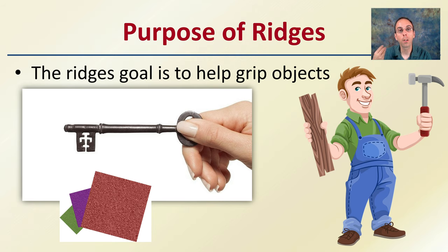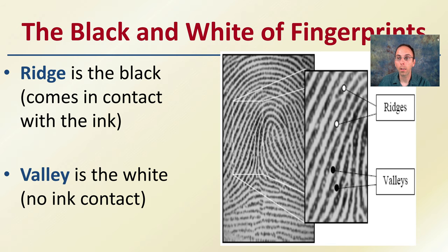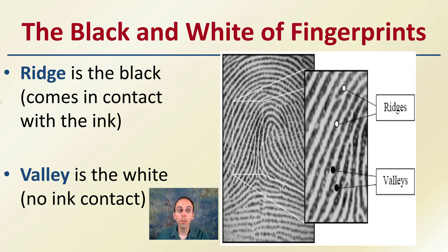If you've ever put hand lotion or oil on, you can see it's very hard to grip things because you're filling in those ridges. When looking at a fingerprint image, the ridge is the black area because it comes in contact with the ink, while the valleys are the white areas that did not contact the ink.